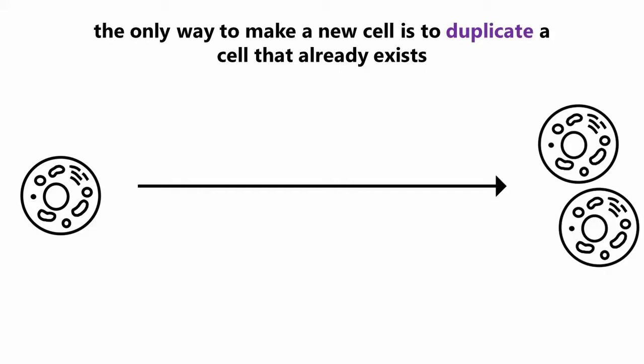Have you ever wondered how a single cell comes into life? A new cell can only be made by the duplication of an existing one. To obtain a fully functioned copy, a specific sequence of events must take place, the so-called cell cycle.